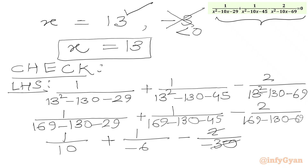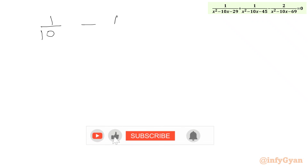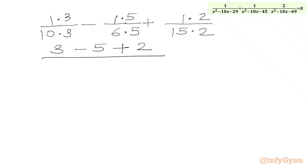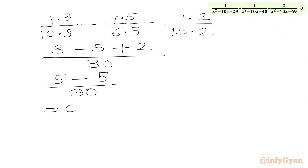So we have 1/10 - 1/6 + 1/15 (since -2 over -30 gives +1/15). Taking LCM of 30: multiply 1/10 by 3, giving 3/30; multiply 1/6 by 5, giving 5/30; multiply 1/15 by 2, giving 2/30. The numerator becomes 3 - 5 + 2 = 0, over 30, which equals 0. This equals our RHS, confirming the solution.